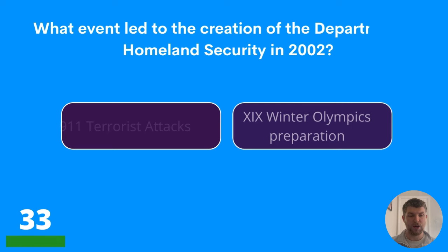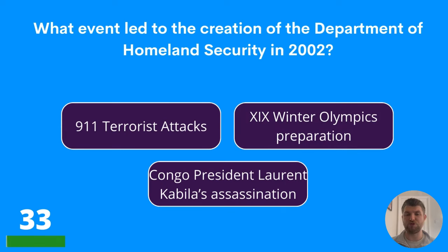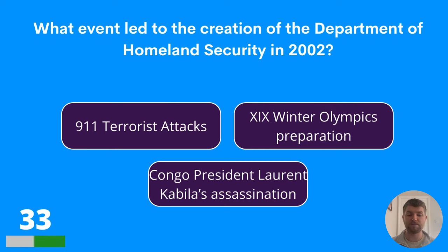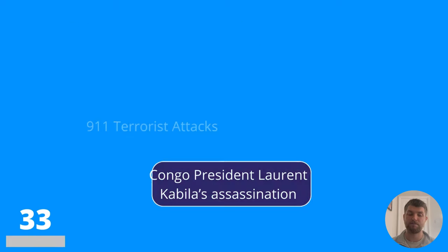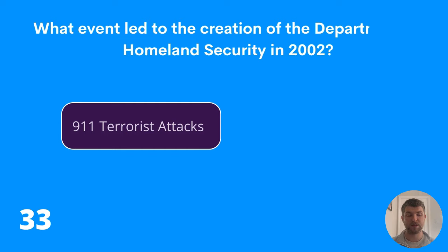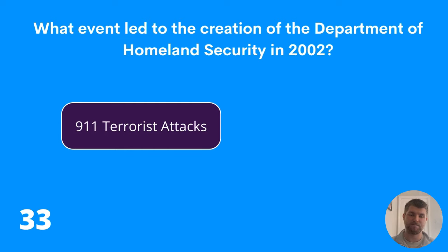Question thirty-three: what event led to the creation of the Department of Homeland Security in 2002? The 9/11 terrorist attacks, the Winter Olympics preparation, or Congo President Laurent Kabila's assassination? The answer was the 9/11 terrorist attacks.